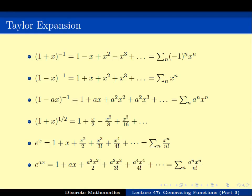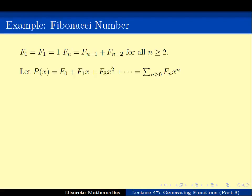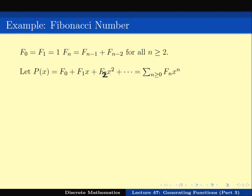In this video, let us tackle the hardest problem of all — the Fibonacci numbers. The recurrence relation is: F0 = 1, F1 = 1, and Fₙ = Fₙ₋₁ + Fₙ₋₂. We start by writing the power series P(x) = F0 + F1·x + F2·x² + ..., which equals the summation of Fₙ·xⁿ. We then write P(x) = F0 + F1·x + summation of Fₙ·xⁿ for n ≥ 2.